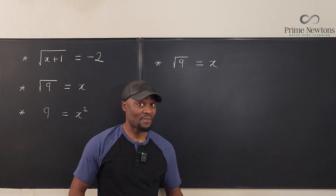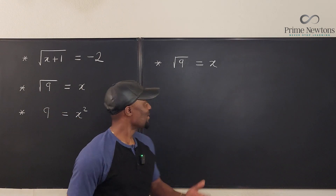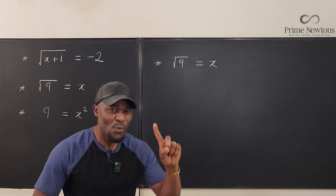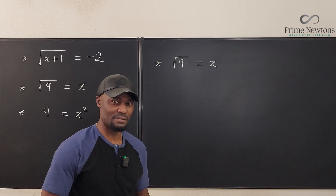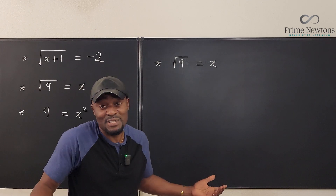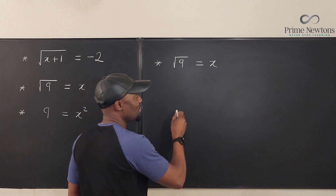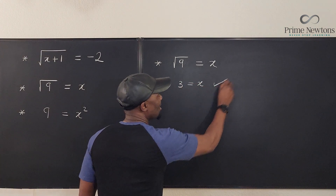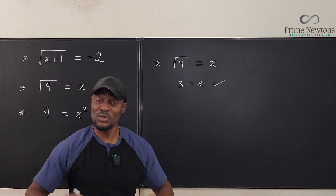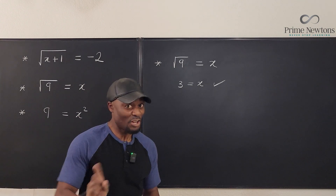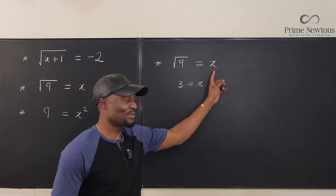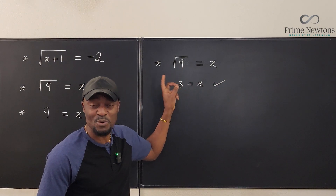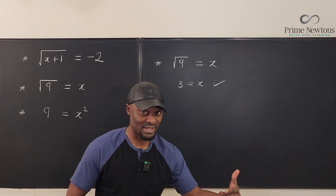Now for the easy one: the square root of nine equals x. How many answers am I expected to get? One answer. And because I'm supposed to get one answer — what is the square root of nine? It is three. So three equals x. Check. Done. Nothing else, no plus or minus three — just the principal root.